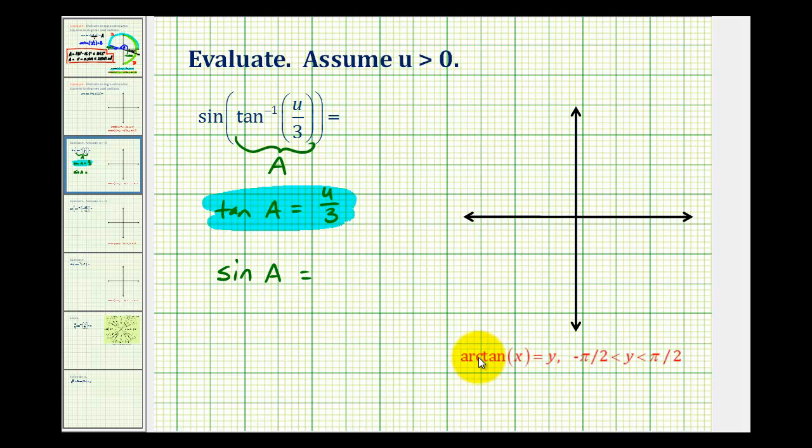Since the output or range of arc tangent is on the open interval from negative pi over two to pi over two, and we know our tangent function value is positive since u is positive, we know angle A must be in the first quadrant.